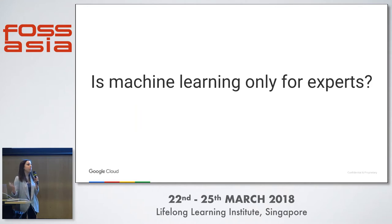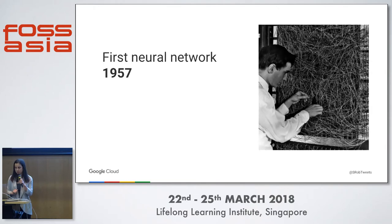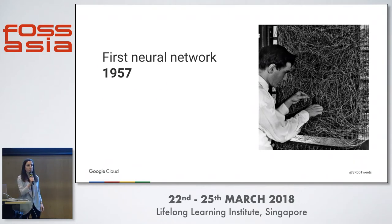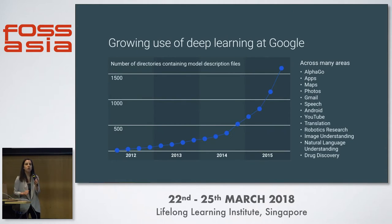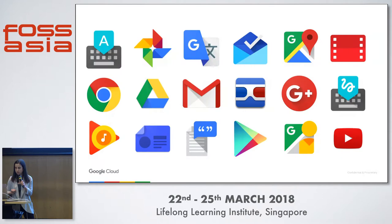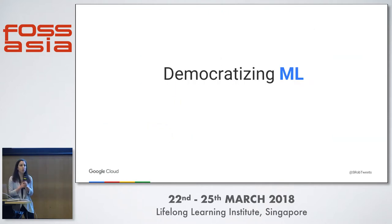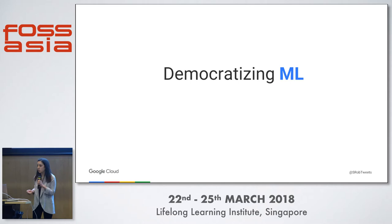Many people see the term machine learning and are a little scared off — they think it's something only for experts. If we look back about 60 years ago, this was definitely the case. This is a picture of the first neural network invented in 1957 by Frank Rosenblatt, called the Perceptron, which demonstrated an ability to identify different shapes. Back then, you needed access to extensive academic and computing resources. Fast forward to today — just in the last six years, the number of products at Google that use machine learning has grown from zero to over 1,500 projects. At Google, we don't think machine learning should be only for experts — we want to put it into the hands of any developer or data scientist with a problem to solve.